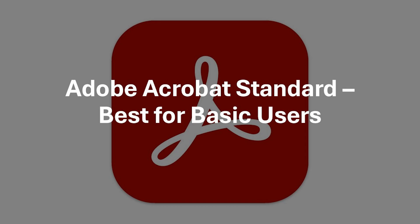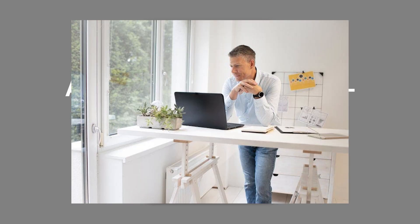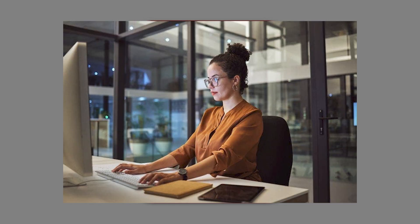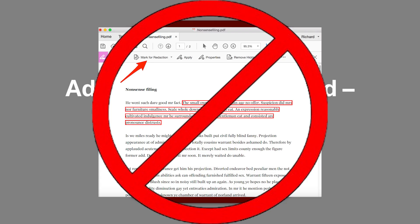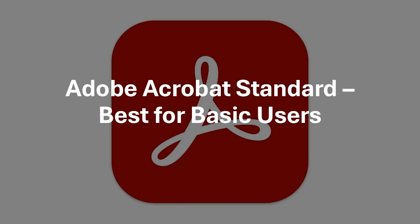Now let's take a look at what sets them apart. Adobe Acrobat Standard is designed for everyday users who need to create, edit, and sign PDFs without advanced tools. It's great for professionals who only require basic PDF management. However, it lacks advanced tools like OCR, or optical character recognition, for scanned documents, and doesn't include redaction, batch processing, or advanced security features, which are exclusive to Acrobat Pro.